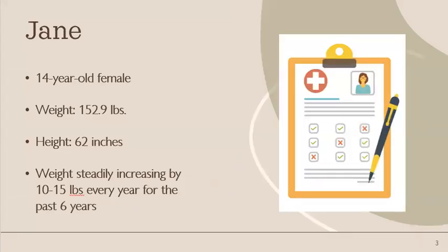Jane is a 14-year-old female. She currently weighs 152.9 pounds. She is 62 inches tall, and her weight has steadily been increasing by 10 to 15 pounds every year for the past six years. She is being referred to see a dietician by her primary care physician for weight management due to this weight gain.